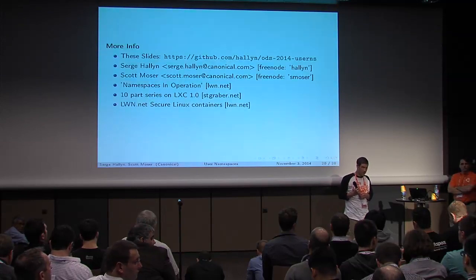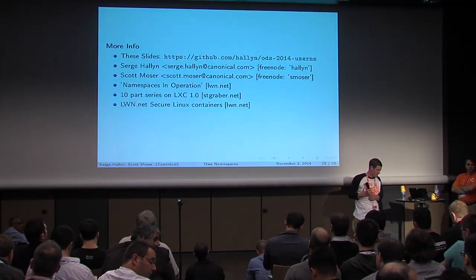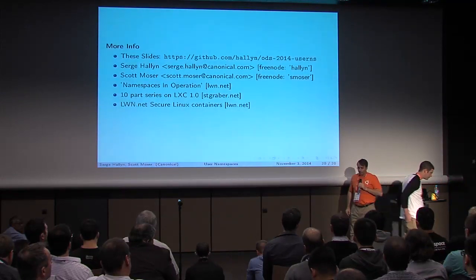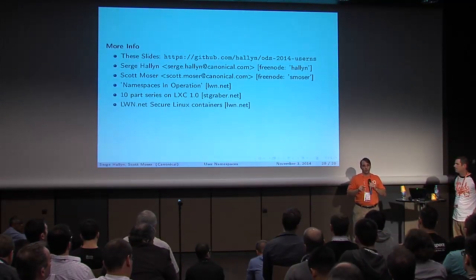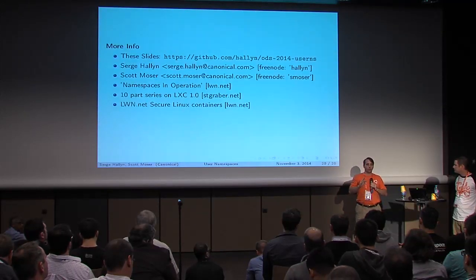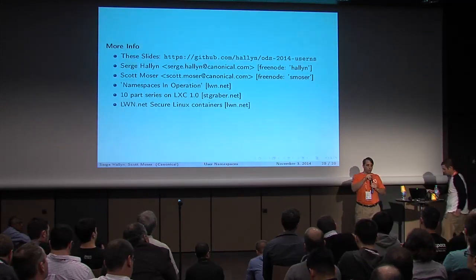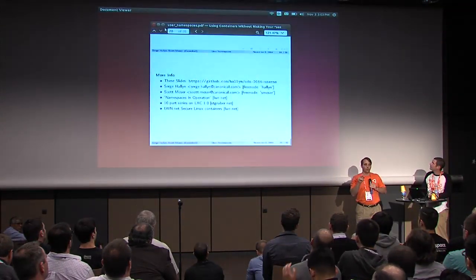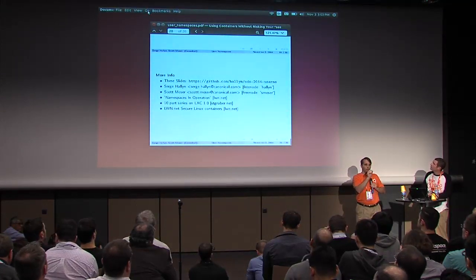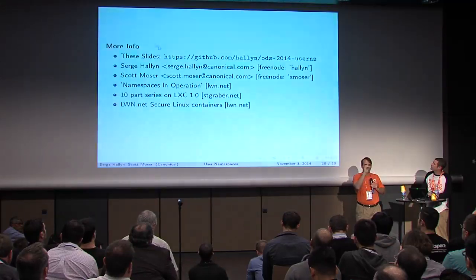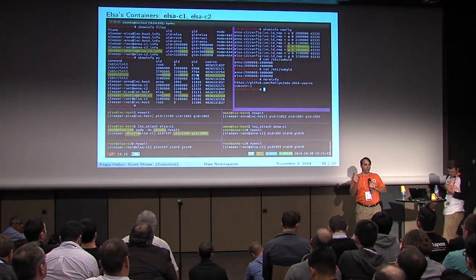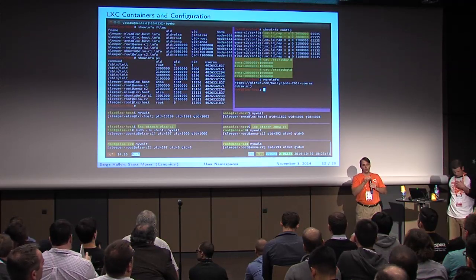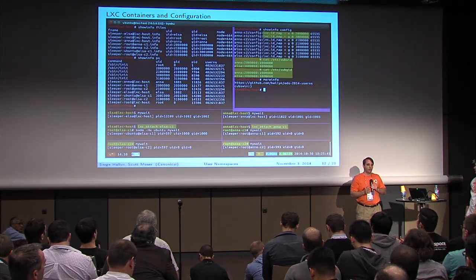Q: The /etc/subuid and /etc/subgid files — what reads those? A: Those are used by the setuid-root programs 'newuidmap' and 'newgidmap.' To create and populate a user namespace, you do a clone or unshare of the user namespace, then write to /proc/self/uid_map and /proc/self/gid_map. The format is: namespace-first-UID, parent-namespace-first-UID, and count. Root can write any valid values; unprivileged users use newuidmap/newgidmap which check the /etc/subuid entries on their behalf.